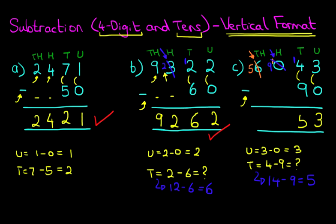So, let's write that down. The tens column: 14 minus 9 is 5. The hundreds column: we've got 9 hundreds minus 0, so that remains 9. And the thousands column: we've got 5 thousands minus 0 — 5 minus 0 is 5. Therefore, the answer to our question is 5,953. That is how we do subtraction of a four-digit number and tens using the vertical format. I'll see you next time.